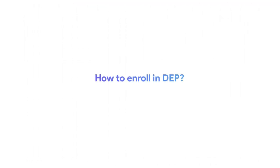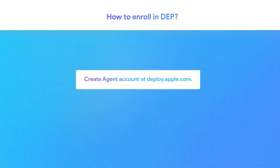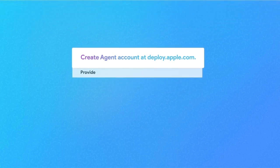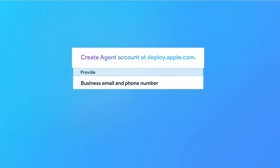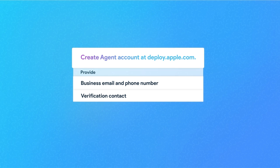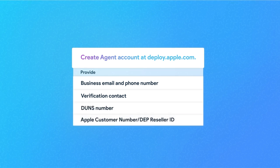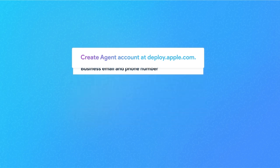How to enroll your organization in DEP? First, create an agent account at the Apple Deployments portal. This account is used for DEP and VPP programs in your organization. Signing up for DEP will require you to provide a business email and phone number, a verification contact, the DUNS number, and an Apple customer number or DEP reseller ID. So before starting the enrollment process, make sure you have all these details handy.